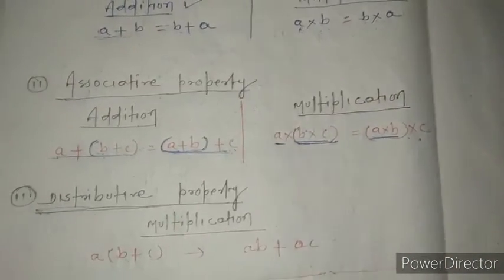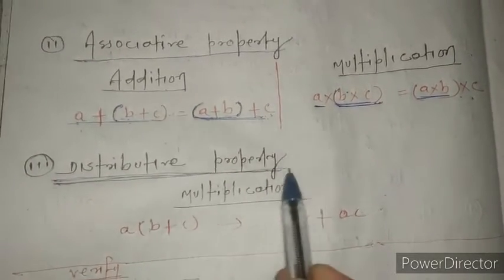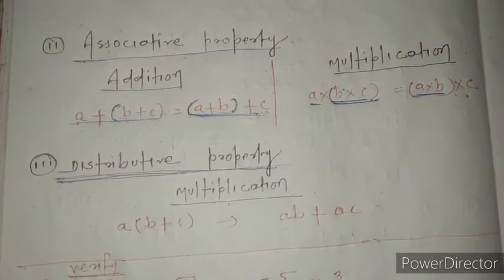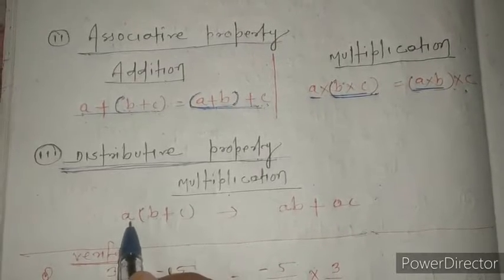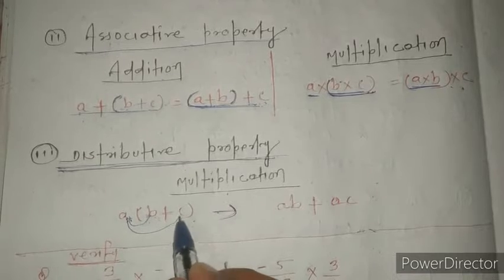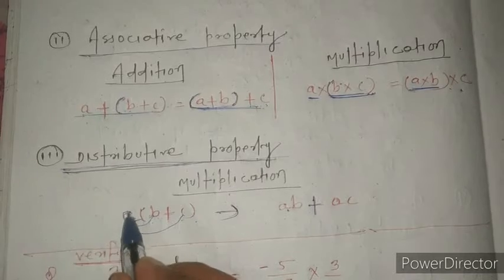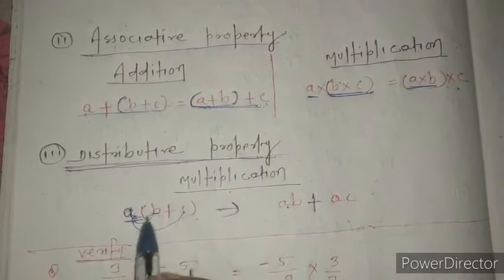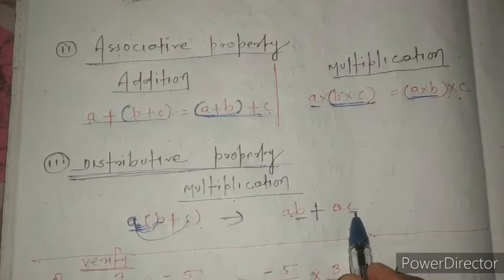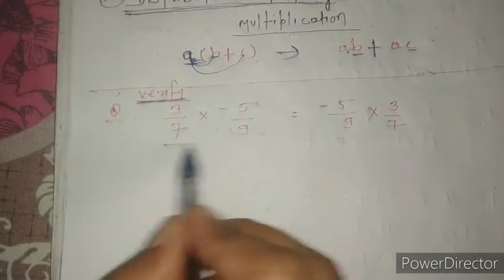The next property is distributive property. This is only for multiplication, not addition. Distributive means to distribute. Like if a is common here, into b plus c, you can write it as ab plus ac. The a which is common for both distributes with b and also with c. That's why we call it distributive property.